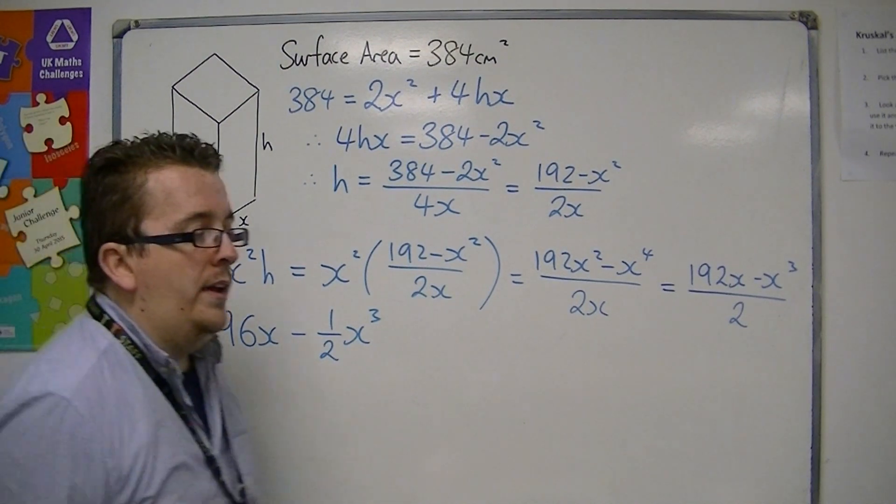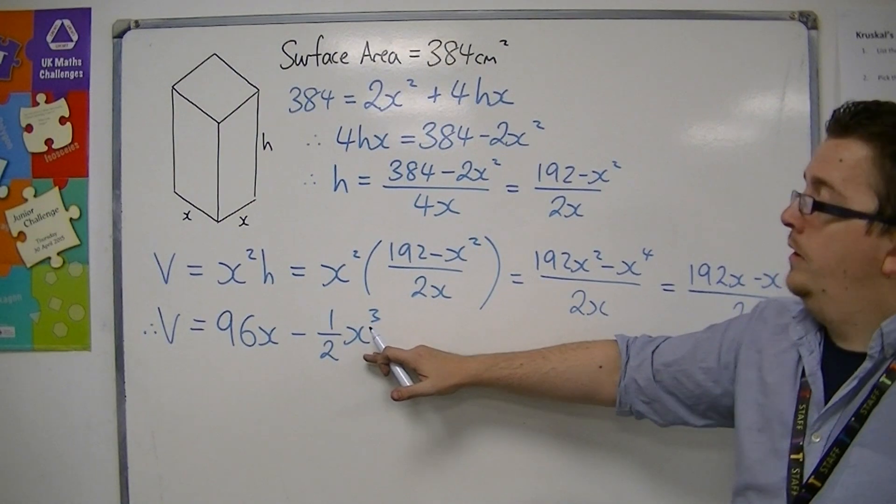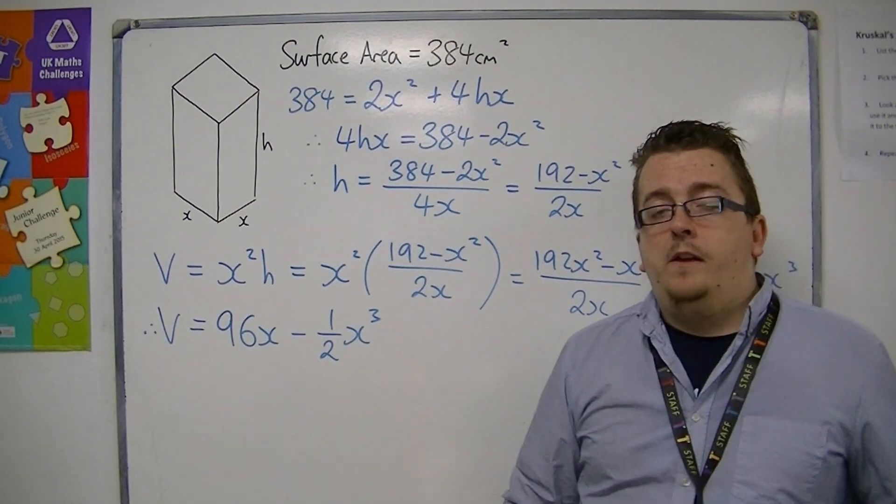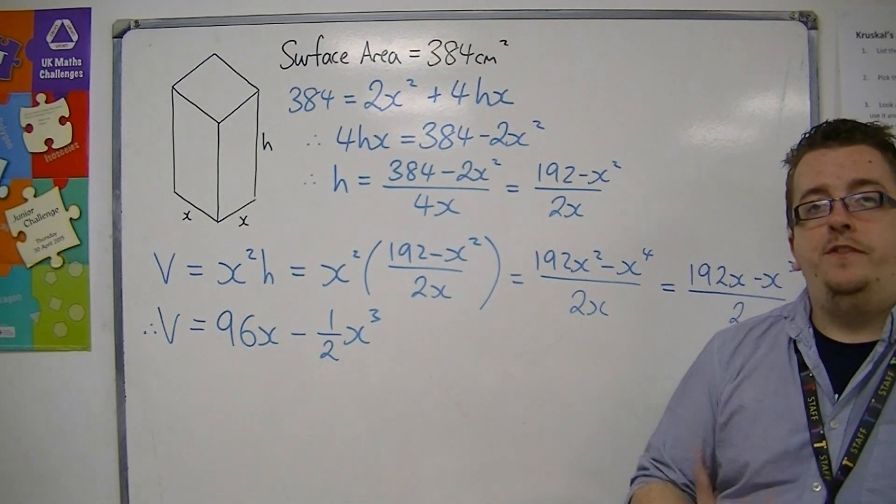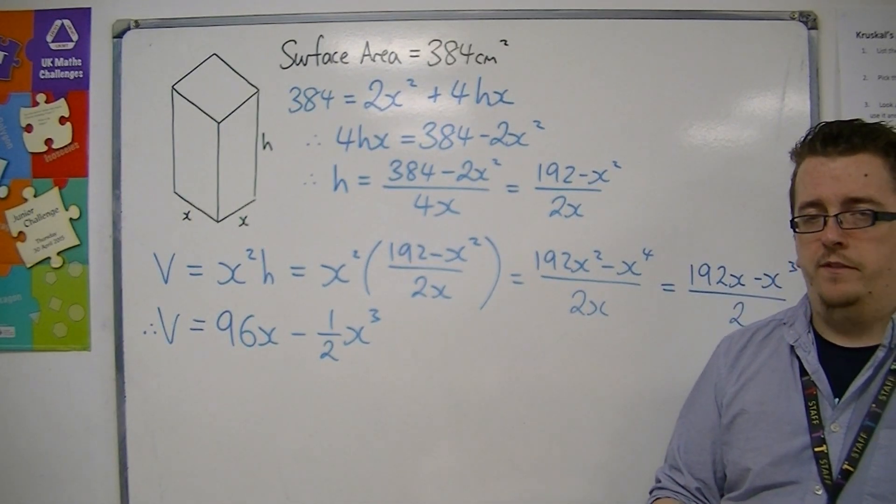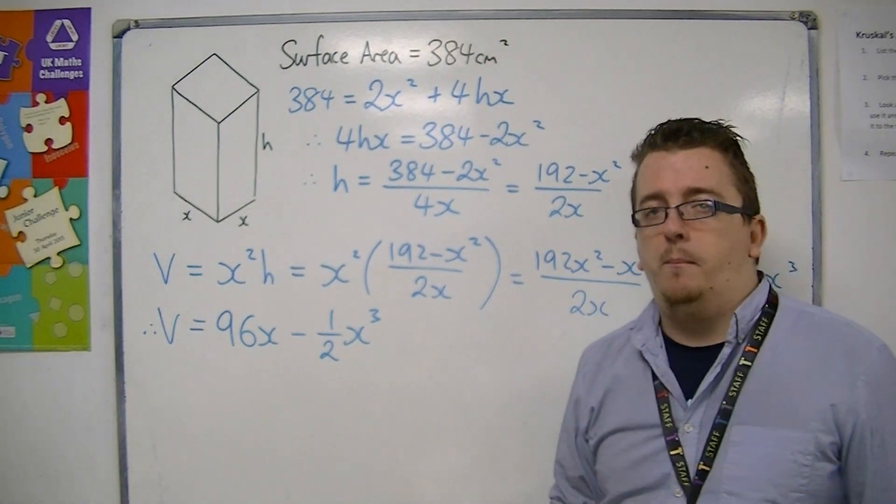Now this is an equation for the volume of the cube. This is a cubic. So now if I differentiate this, I will be able to find the stationary points of the curve, and this will be able to tell me where the maximum point is.